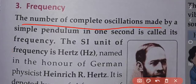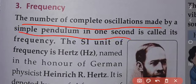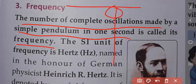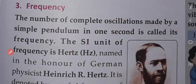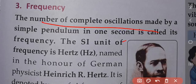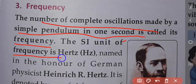The number of complete oscillations made by a simple pendulum in one second is called its frequency. The SI unit of frequency is hertz.